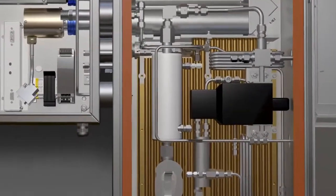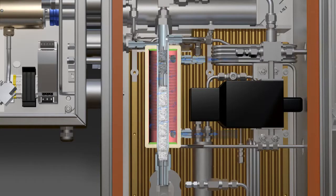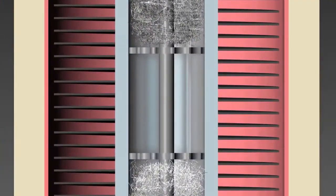As the tail gas enters the analyzer, the newly designed internal demister removes entrained elemental sulfur mist from the gas stream using dual Teflon and stainless steel demister pads.